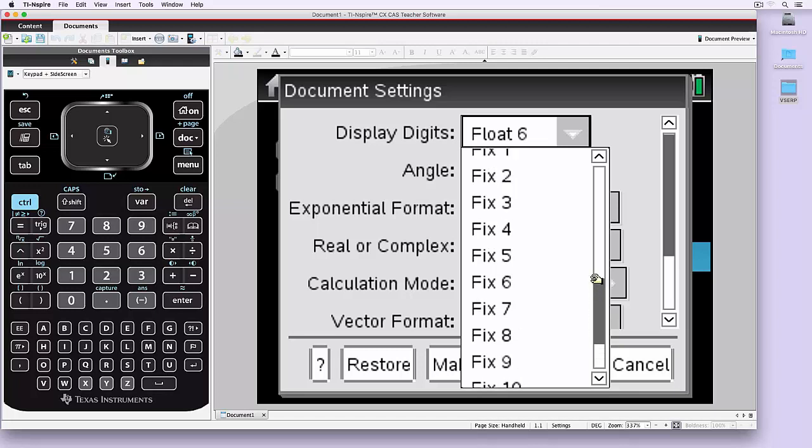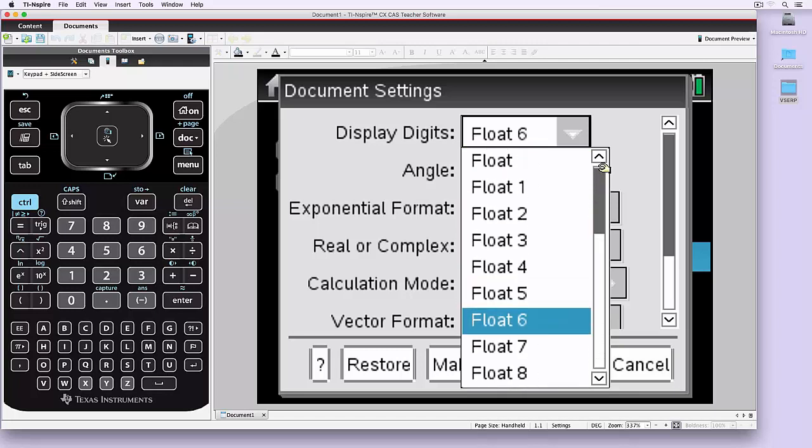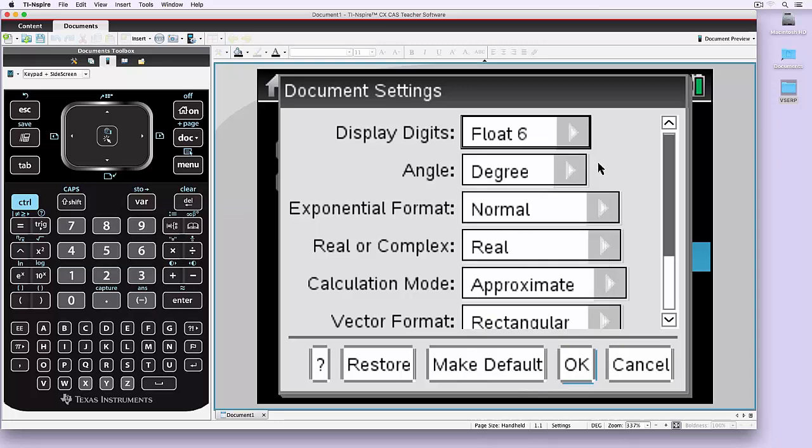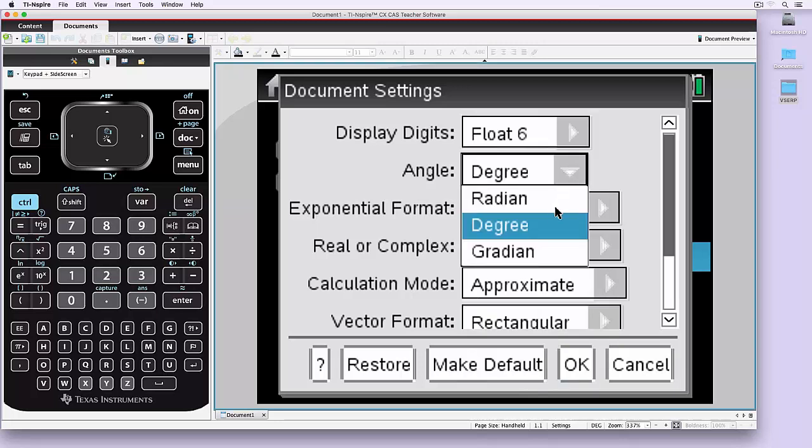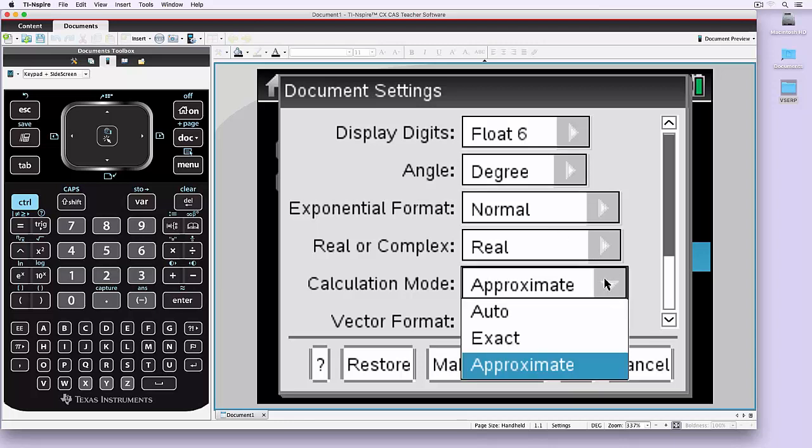The calculator itself can do 14 floating points, but we tend to make it 12 for the display purposes. Degrees is always the setting for further maths for the angles, and generally people use approximate.